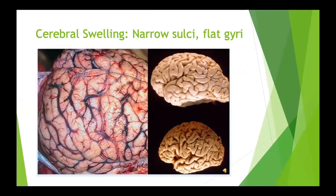Just to show what cerebral swelling actually looks like: in TBI, normally you have nice deep sulcal markings with normal gyri. This example shows a more atrophied brain where sulcal markings are deeper and gyri are not as full. The picture on the left depicts a severely swollen brain with loss of autoregulation, hyperemia filling the brain and pushing up intracranial pressure quite severely.